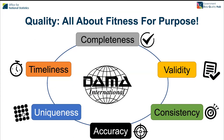We defined quality in terms of fitness for purpose — how the data are going to be used — and we consider the six dimensions of data quality from the Data Management Association, DAMA. These are: completeness — how much of the necessary data are present; validity — are there values in valid ranges as you'd expect; consistency — are the data consistent between systems and datasets; accuracy — do the data values reflect the real world; uniqueness — do duplicate entries exist, or is there dead wood in the data; and timeliness — are the data available at the time needed.